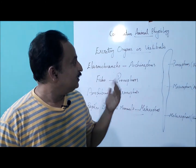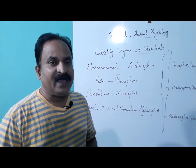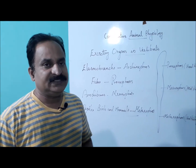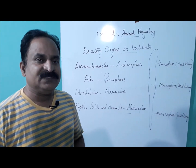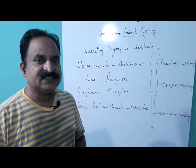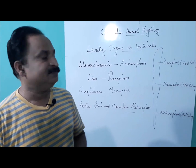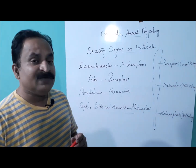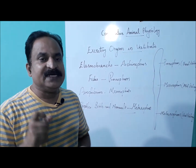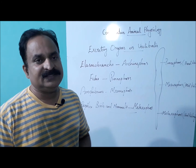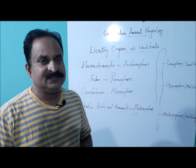Here we are going to discuss about excretory organ and physiology — comparative animal physiology of excretion in vertebrates. In vertebrates, kidney and associated organs are the excretory structures.